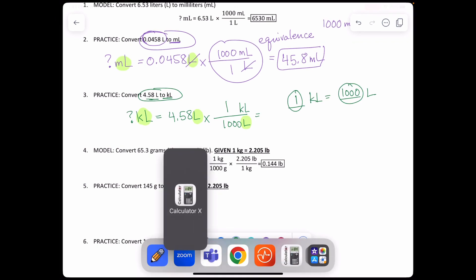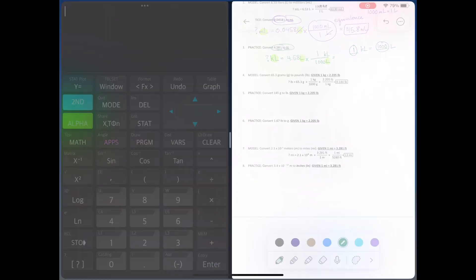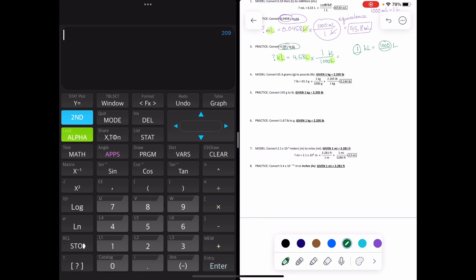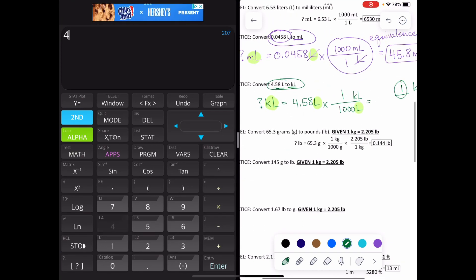Let's plug this into our calculator. 4.58. I can hit times one divided by a thousand. I don't actually have to hit the times one.